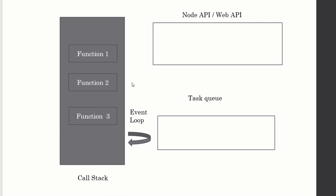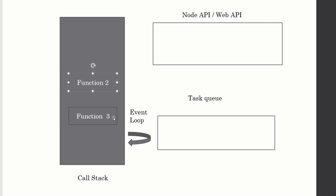The problem is what if function two has a fetch or setTimeout that requires more time — say, talking to a database that takes five seconds. With a synchronous process, your program will be stuck for those five seconds. It cannot skip to function three; it stops and makes your user wait. That's not something we want.